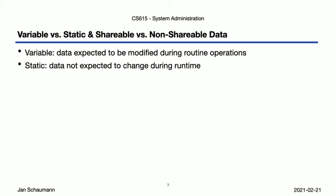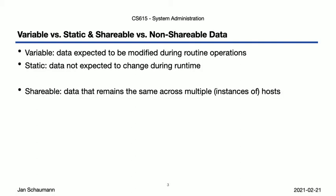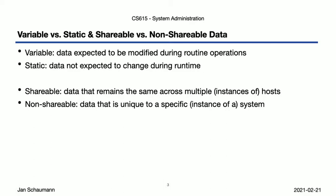The separation can also help you organize your filesystem across multiple hosts. For that, you may want to further divide your data into shareable data — data that, if you run multiple hosts, remains the same across all of them — and non-shareable data, data that is necessarily unique to each individual host. If you know which datasets are identical across hundreds or thousands of hosts, then you can think about how you can share, deploy, or manage it in a central fashion, while the non-shareable bits need to be managed on a host-by-host basis.